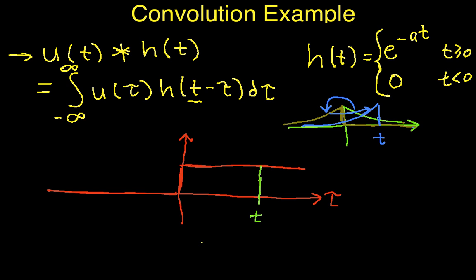So basically, this h of t minus tau is going to look something like this.